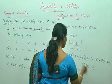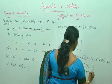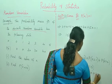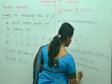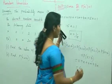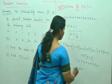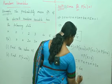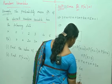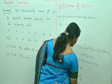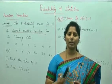P(X < 4) equals 0 plus a plus 2a plus 3a. From this we get 6a. From the previous part we already found a equals 1 by 15, so from this we can write it as 6 by 15, which is nothing but 2 by 5 — and that is the answer. This is how you find the discrete random variable.